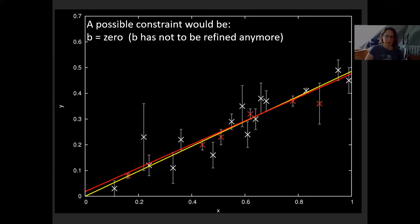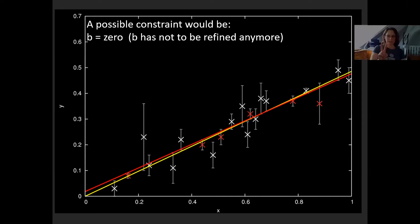Constraints fix one of your parameters to a value that you know. For example, b has to be zero, so there is no starting value. The function we are fitting is then y equals m times x plus zero. You've reduced the number of parameters from two to one. If you have 15 measurement points and only need to determine one parameter, it's a much better determination than having two parameters fitted to 15 data points.